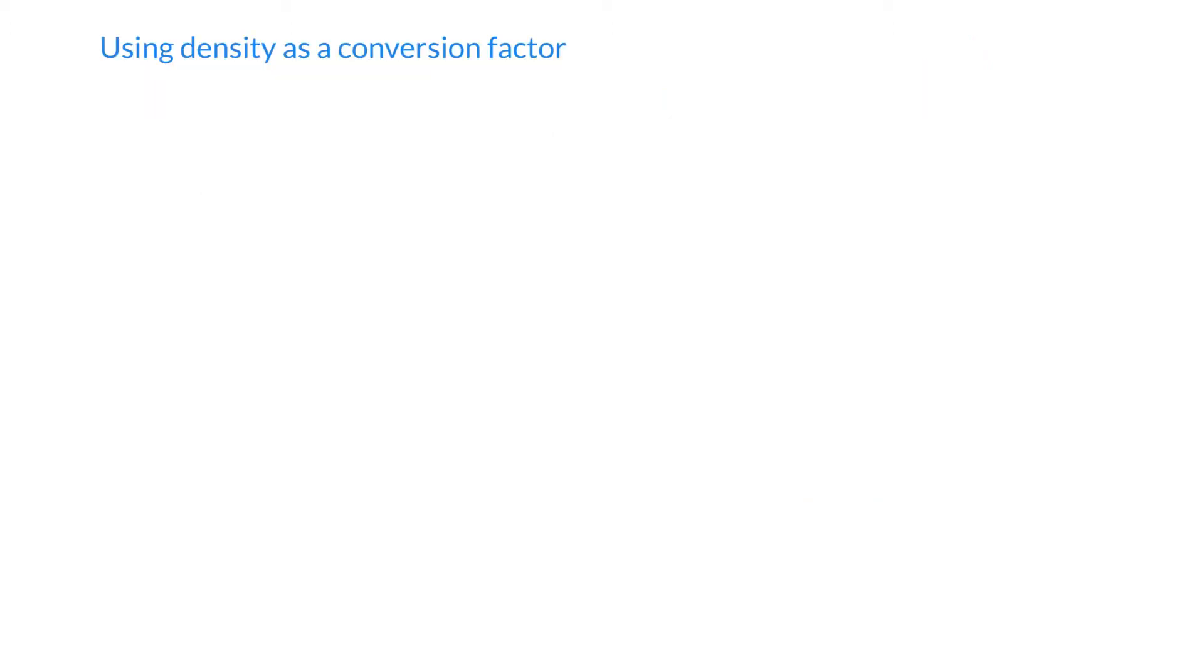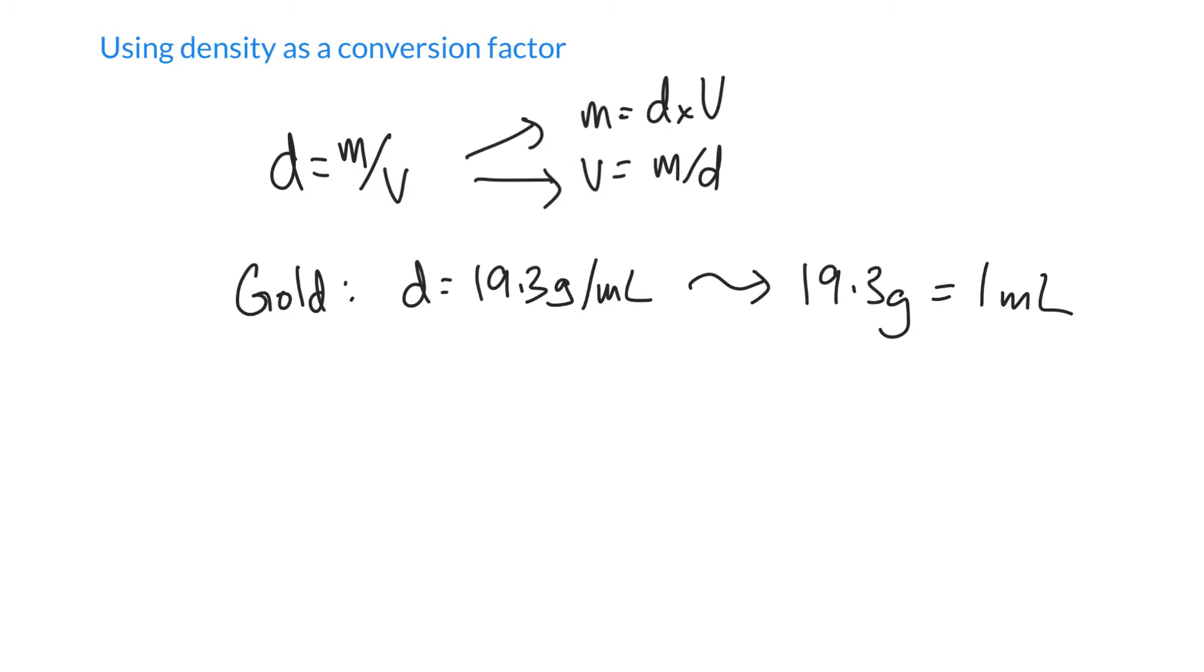We can do calculations using density, and we can do it with a little bit of algebra. So if density is mass over volume, we can always rearrange and show mass is density times volume, or volume is equal to mass over density. So if you prefer it that way, you're welcome to use it. Or you can use it as a conversion factor. So for instance, gold has a density of 19.3 grams per milliliter. And what that means is that there are 19.3 grams in every milliliter of gold. So we can use it as a conversion factor.